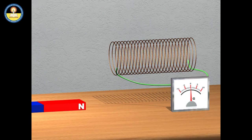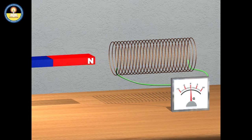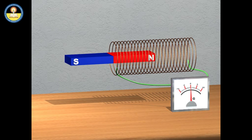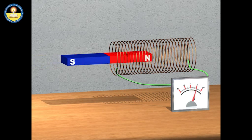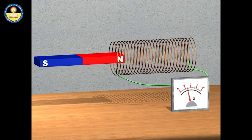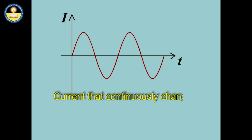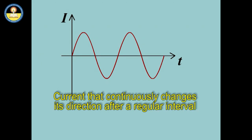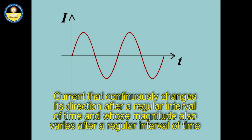Due to the relative motion of a magnet and a coil of conducting wire, electric current is induced in the coil. In this situation, induced current is generated due to back and forth movement of electrons, alternatively by the north and south poles of the magnet. The direction of current continuously changes after a regular interval of time. When the current continuously changes its direction and magnitude after a regular interval of time, it is called alternating current.